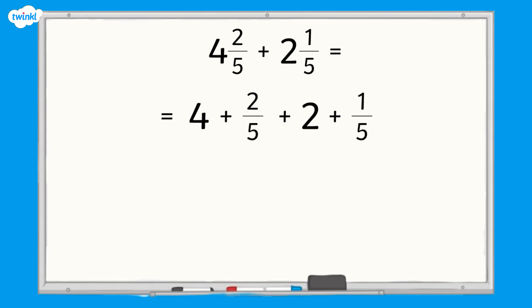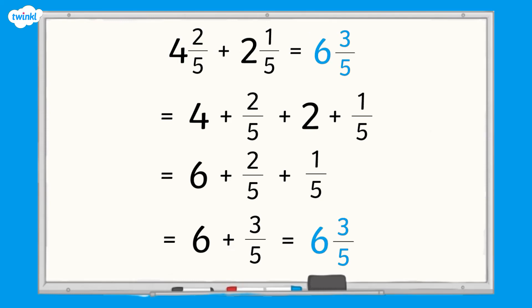Let's add the whole number parts. Four add two equals six. Now we need to add the fraction parts. Two-fifths add one-fifth equals three-fifths. Finally we can recombine the whole number part and the fraction part to give our answer six and three-fifths.